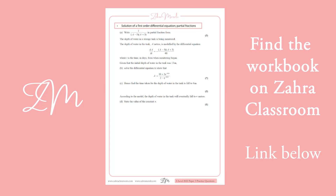We've got a first-order differential equation with partial fractions — they've hinted to write it in partial fraction form in part a. We've got (a minus 5)(a plus 3), so we use C over (a minus 5) plus B over (a plus 3). That gives us C(a+3) + B(a-5). When a equals 5, we get 8C equals 1, so C is an eighth.